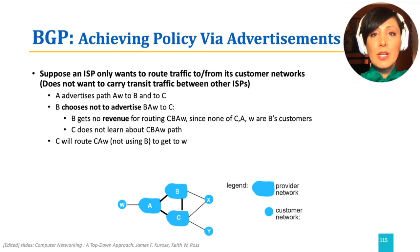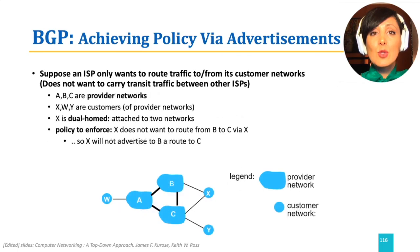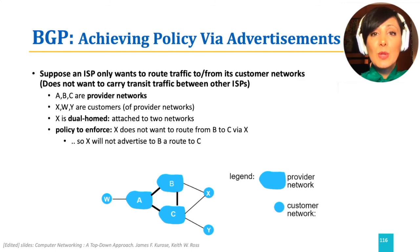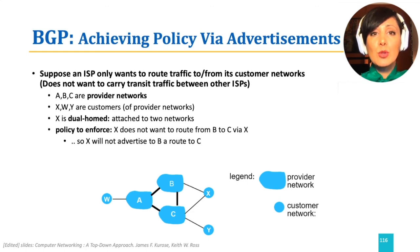In the same network, X is dual-homed, meaning it has two networks providing service to it: B and C. X may not want to route traffic from B to C. To achieve this, X will not advertise to B that it has a route to C.